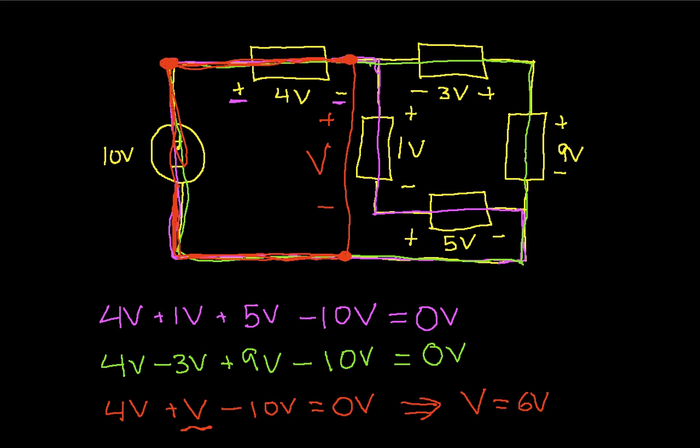So I can actually use Kirchhoff's voltage law to solve for unknown voltages. What that tells me is that the voltage from this node to this node is six volts. And sometimes when you're solving circuits, being able to find the voltages between two nodes in the circuit can be very helpful.